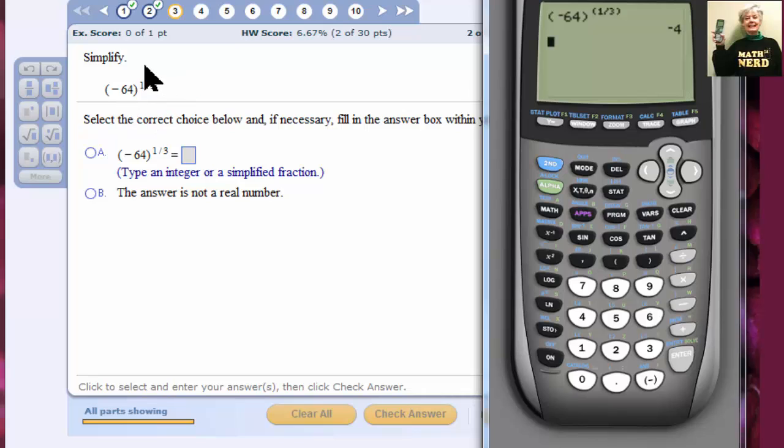But, what this can also be written as is the cube root. Let me do that. I'm going to go to math. I'm going to go down to the cube root, which is 4. There's cube root, negative 64. Enter. And again, I would have a negative 4.